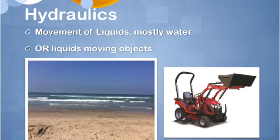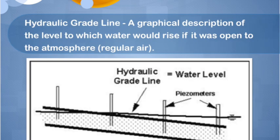Based on our new knowledge of hydraulics, a hydraulic grade line is a graph of how a liquid, usually water, moves from one point to another, such as from the top of a mountain to the surface of a lake. The dark arrow in the middle of the page points to the hydraulic grade line.